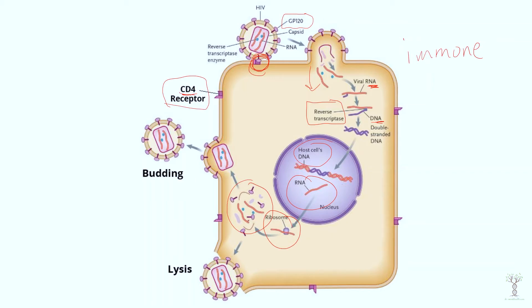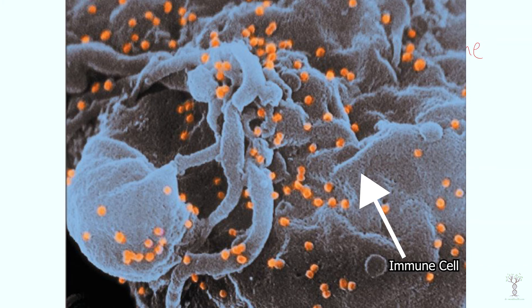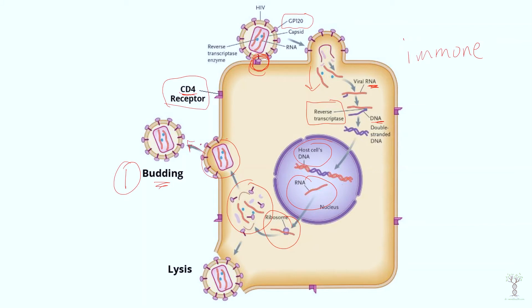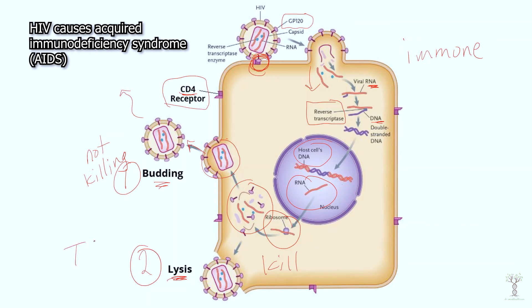There are two things that can happen. Number one, HIV can bud from an immune cell — forming a new virus particle and leaving the immune cell without killing it. When it buds, it is released and the new HIV can go infect another immune cell. Or number two, it can cause lysis, meaning it will kill the immune cell. When HIV goes through this lysis phase with helper T cells, this is when we can become severely immunocompromised.